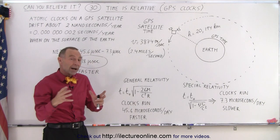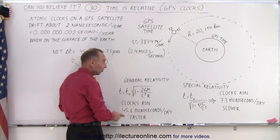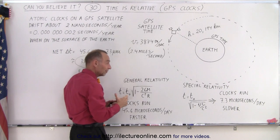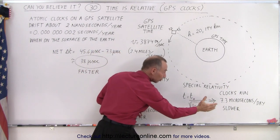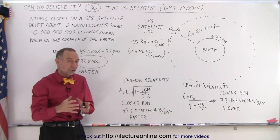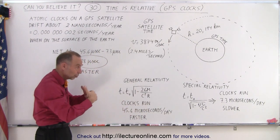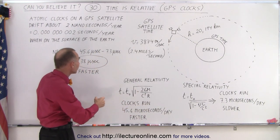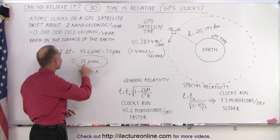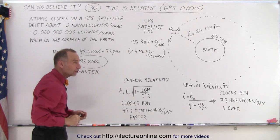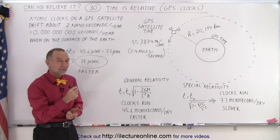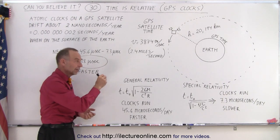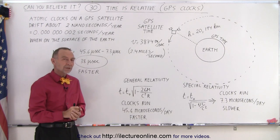So when you combine the two, 45.6 microseconds faster due to the general theory of relativity, due to gravity, and 7.3 microseconds per day slower because of the special theory of relativity, that's due to the speed of the satellites, when you combine them, that means that the clocks on the satellite, those atomic clocks, run 38 microseconds per day faster than the same atomic clocks on the Earth.